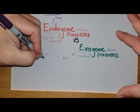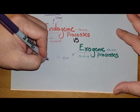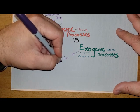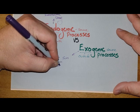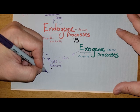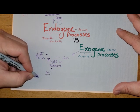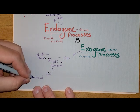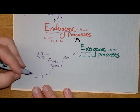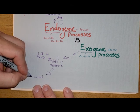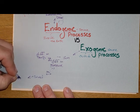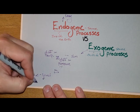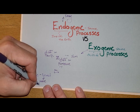Differences in temperature lead to differences in pressure, and those differences in pressure lead to wind. Those wind processes are the main thing shaping our deserts and desert environments, as well as coastal processes. The wind itself moves material around, and it also causes a lot of ocean wave activity — both of which break things down.